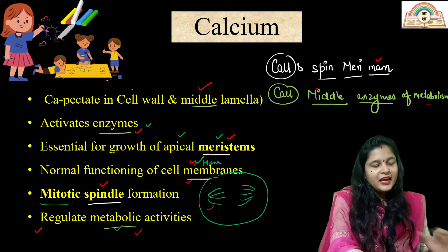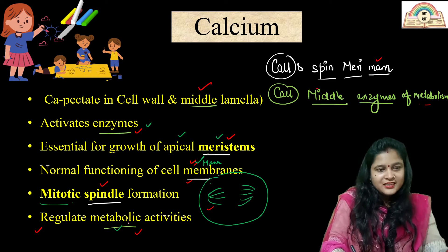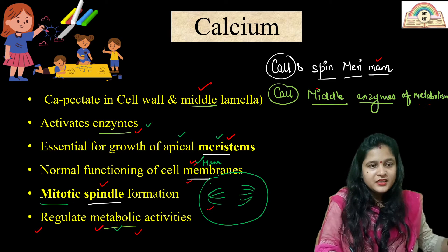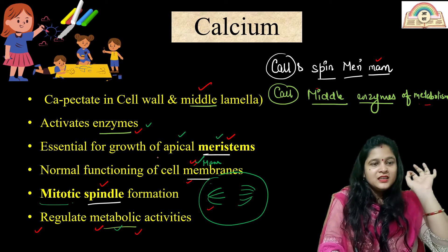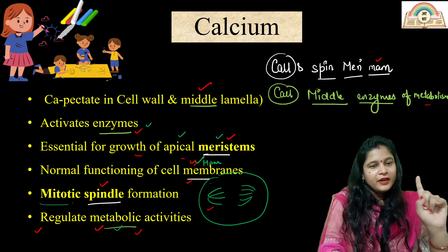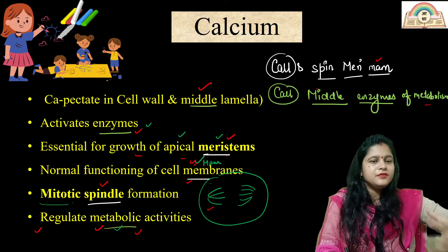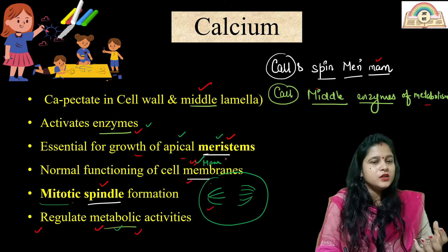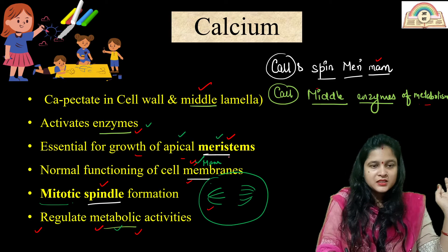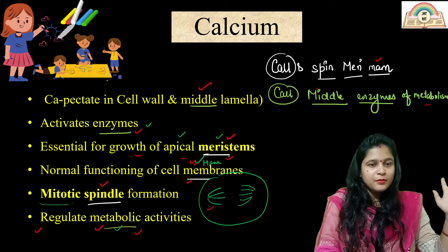Calcium activates different enzymes and regulates different metabolic activities. It is also essential for the growth of the apical meristem — the meristematic tissue located at the apex of root and shoot.